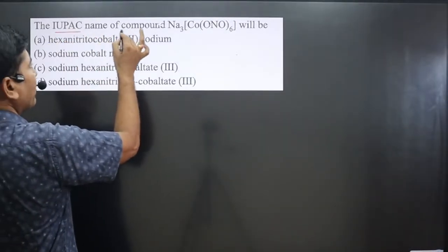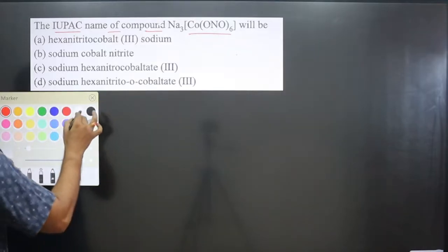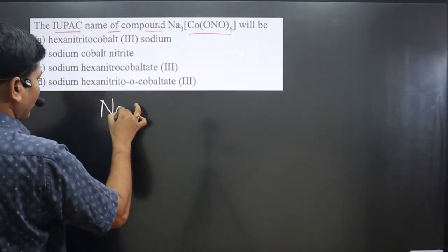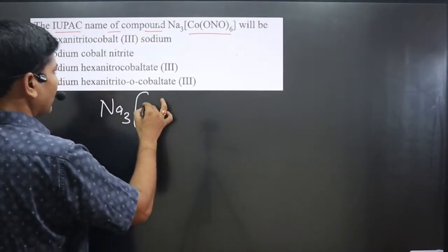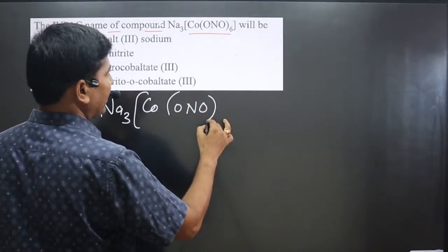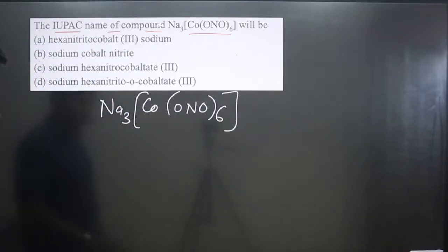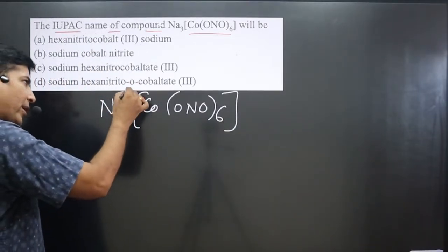The question asks for the IUPAC name of the compound Na₃[Co(ONO)₆]. We have Na₃ in brackets, then cobalt, and ONO - this is an ambidentate ligand. The whole formula has a subscript 6 with a closing bracket. If you break this complex from here, this is the counter ion and the first part is positive and the next part is negative.